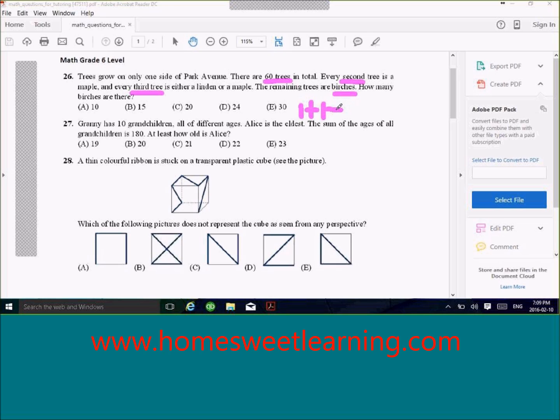And then you go plus the third one, it will be linden or maple, and you do this all the way up. You do this all the way up to equal to 60.